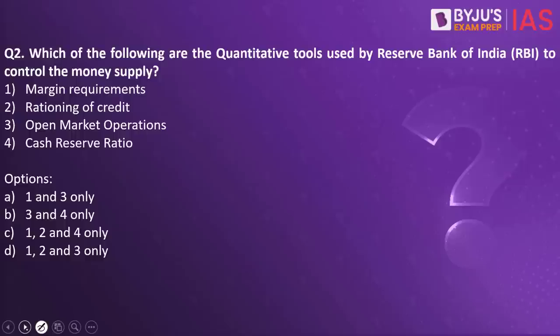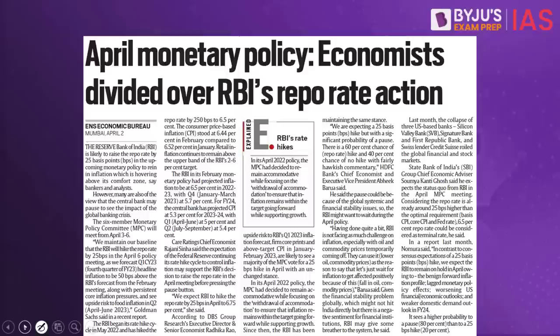Which of the following are the quantitative tools used by the Reserve Bank of India to control money supply? The options are: margin requirements, rationing of credit, open market operations, and cash reserve ratio. The answer is 3 and 4 only — open market operations and cash reserve ratio. We have taken this practice question because this article on the Indian Express makes a reference to RBI's repo rate, which is one of the quantitative tools.